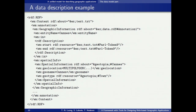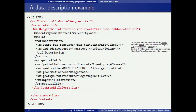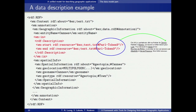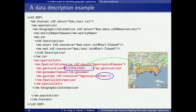This is an RDF XML sample that corresponds to the data model part. This description indicates that the file test.txt contains one annotation named annotation one. This annotation is about an entity named Caen, and this entity is located in the first paragraph of the text at the ninth token. This entity is associated to a geolocation represented by a polygon and a geotype of town.